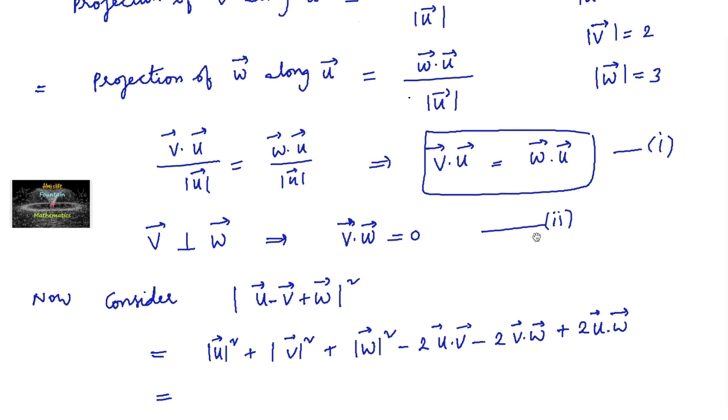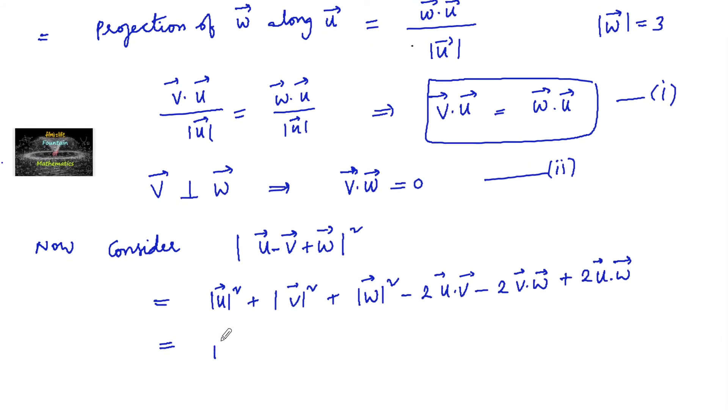Which equals mod u is given 1, 1 square; mod v is given 2, that is 2 square; and mod w is 3, that is 3 square, minus 2 times u dot v. And w dot u both are the same from the first equation, so we can cancel these two. Then v dot w, from the second equation, is equal to 0, so we can write this is just 0.